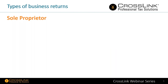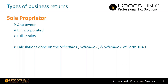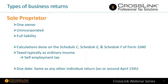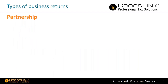The first type of business return is the sole proprietor. It's one owner, unincorporated, with full liability. Calculations are done on Schedule C, Schedule E, or Schedule F, and they are done on Form 1040. If you've been doing individual returns for someone who is self-employed, you've already been doing a business return. Taxes are typically done as ordinary income — self-employment tax — and the due date is on or around April 15th.